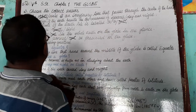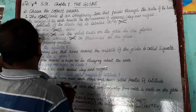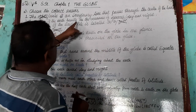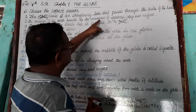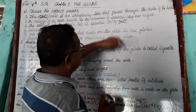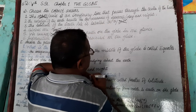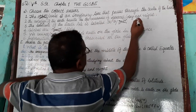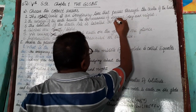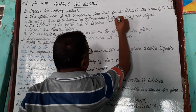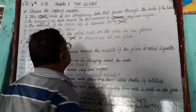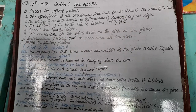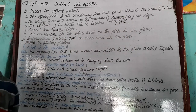Correction: the rotation of the earth results in the occurrence of day and night — not seasons. Thank you very much.